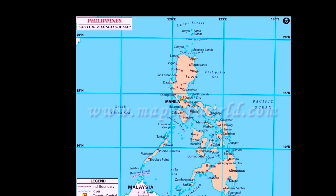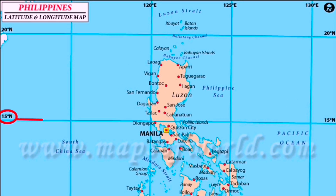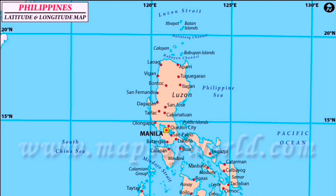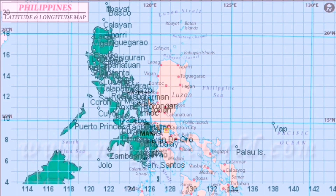The intersection point between the latitude and longitude of a certain place to find its location is called a coordinate. In this map, the intersection point near 15 degrees north and 120 degrees east is Zambales, as well as 15 degrees north and 115 degrees east, where the South China Sea is found. And also, at 13 degrees north and 124 degrees east, where the Pacific Ocean is found.